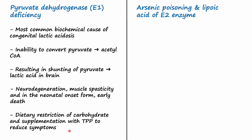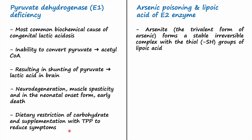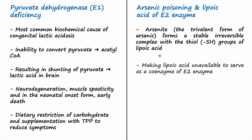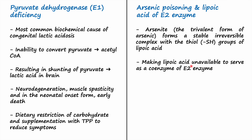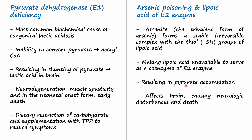The second condition is arsenic poisoning. Arsenide, the trivalent form of arsenic, forms a stable irreversible complex with the thiol or thioester group of lipoic acid, making lipoic acid unavailable to serve as a coenzyme for E2 enzyme. This results in accumulation of pyruvate in cells, specifically in the brain, causing neurologic disturbances and death. Notably, arsenic is a slow poison because it takes time to affect enough enzymes to become lethal; it builds up in the body and can be detected in hair.